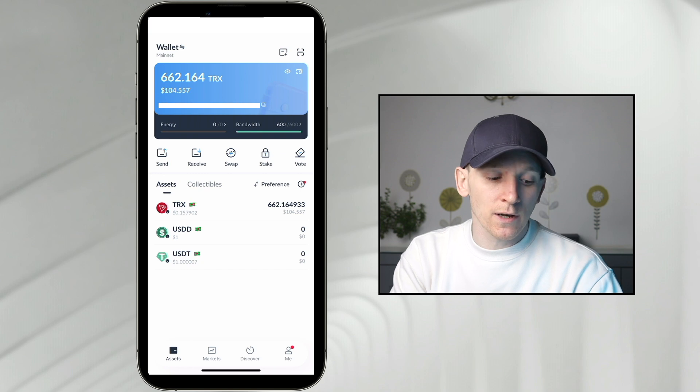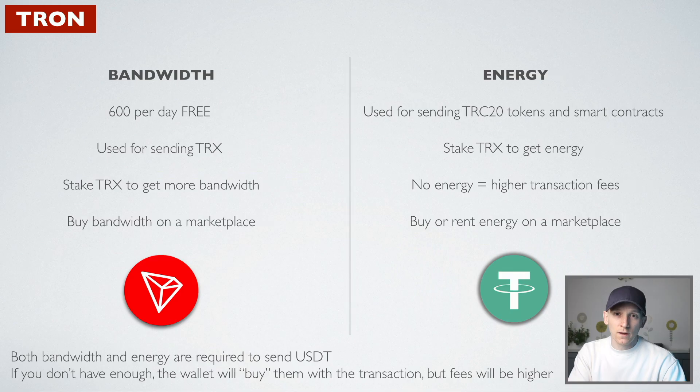If you are using the Tron blockchain, especially wallets like Tronlink, you will see energy and bandwidth here. So firstly, what's the difference between them?